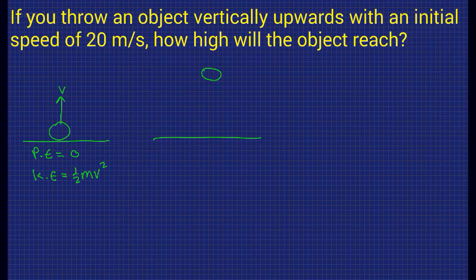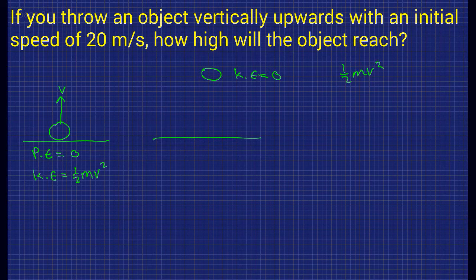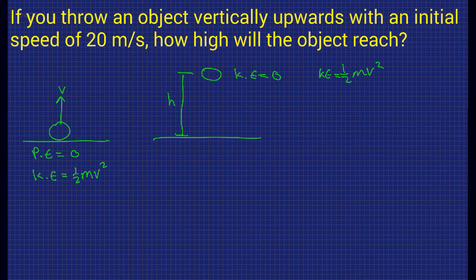At the top of the path, the ball is stationary, so the kinetic energy equals zero. The equation for kinetic energy is half mv squared, and since speed is zero, kinetic energy is zero. But the potential energy is not zero — now we're at a height h, so the potential energy equals mgh. This is our equation for the potential energy of an object at height h above the ground.